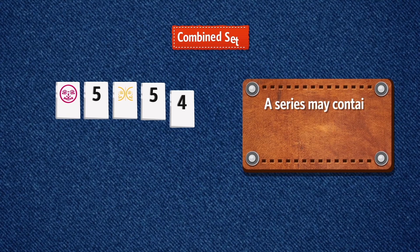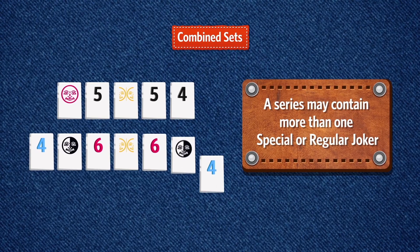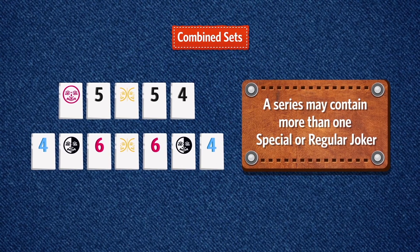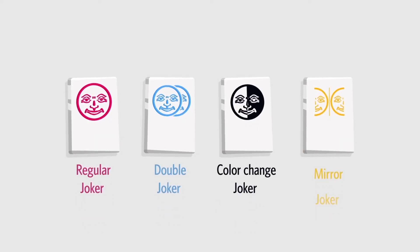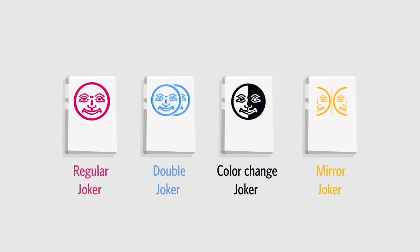More than one regular or special joker can be used in a combined set. The jokers from your rack can be played at any stage of the game. Cleared jokers on the table are waiting to be used again, as long as three tiles remain in every set.